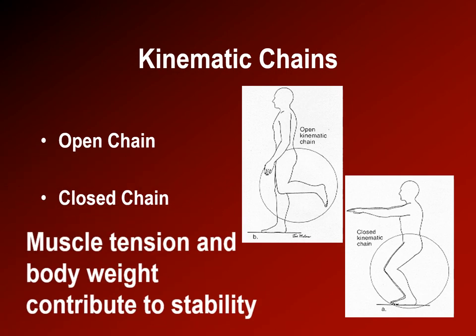In closed-chain exercise, a combination of muscle tension and body weight contributes to the stability of the joints — for example, the knee joint in a squat.